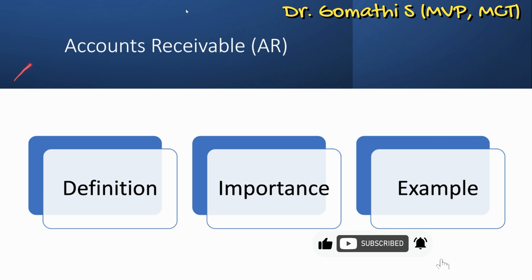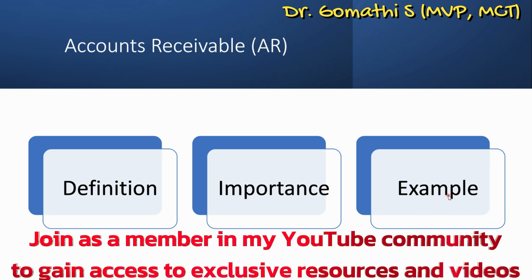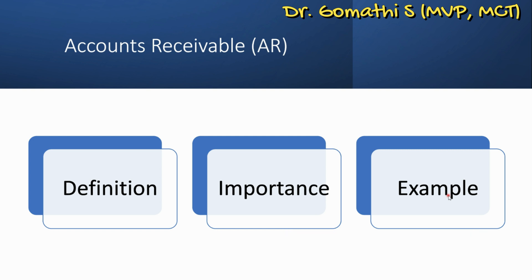Next is accounts receivable. Accounts receivable represents the money owed to a company by its customers. It involves tracking customer payments and managing cash inflows — the amounts we need to receive from our clients or customers. For example, when a company sells products to a customer on credit, the sale is recorded in the accounts receivable module. As the customer makes payment, they are allocated against specific invoices, reducing the accounts receivable balance.